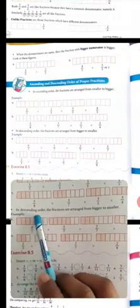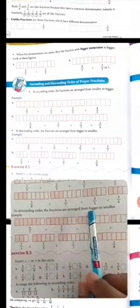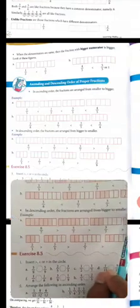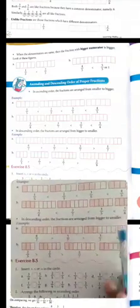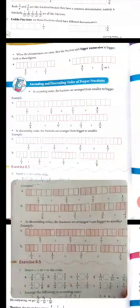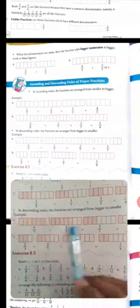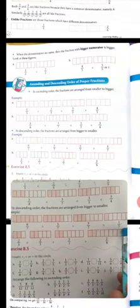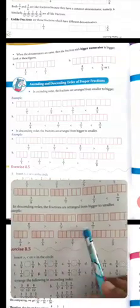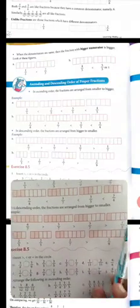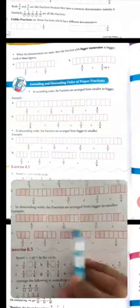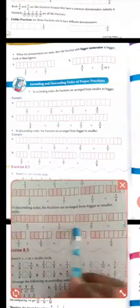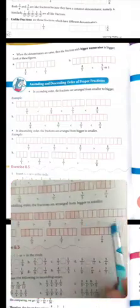In descending order, fractions are arranged from bigger to smaller — that is, bade se chote ki taraf. That is the opposite of ascending order. For example: 6 upon 7, 5 upon 7, 3 upon 7, and 1 upon 7. Here 7 is the equal denominator for all fractions. Denominators are the same but numerators are different, so the biggest numerator is the biggest fraction. The biggest numerator is 6, so 6 upon 7 is the biggest.